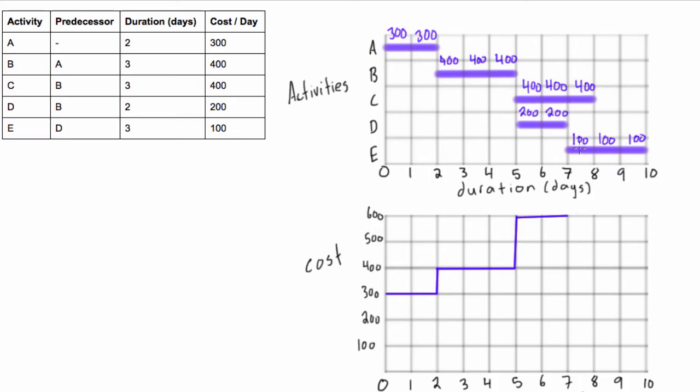But let's look at this. We have $400 plus $100, so on day eight we have a total of $500 being spent that day. So we'll come down just like that.